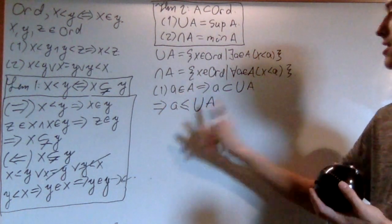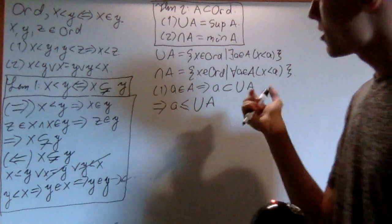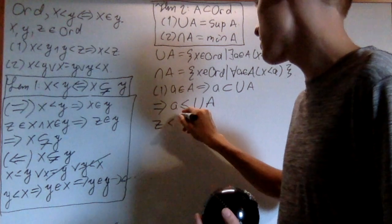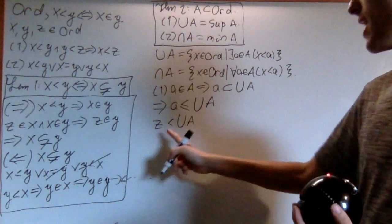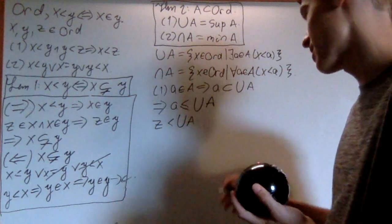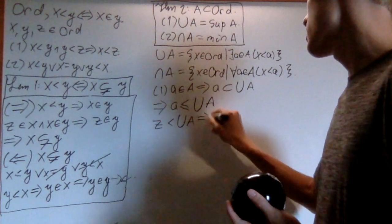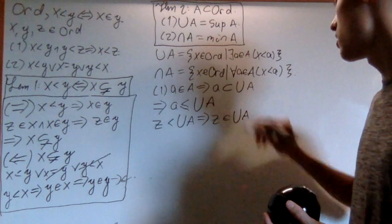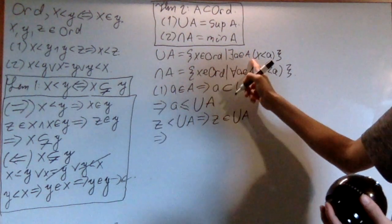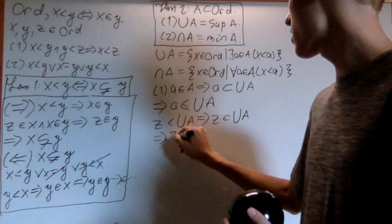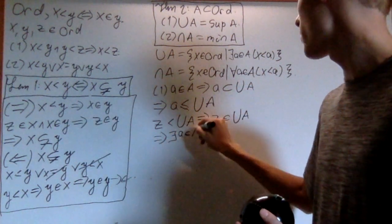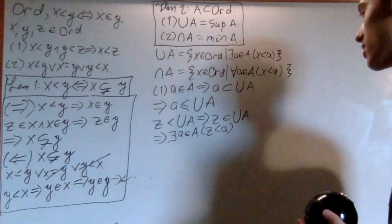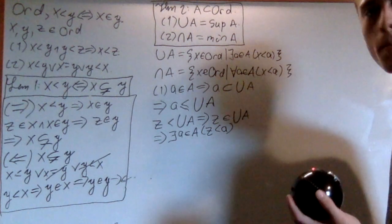The reason why this is the least upper bound: if I have z less than the union of A, then z cannot be an upper bound. Because if z were less than the union, that would mean z is an element of it. Which means, by the definition of the set, there exists an element a in A such that z is less than a. So z is less than one element of A, meaning it's not an upper bound.